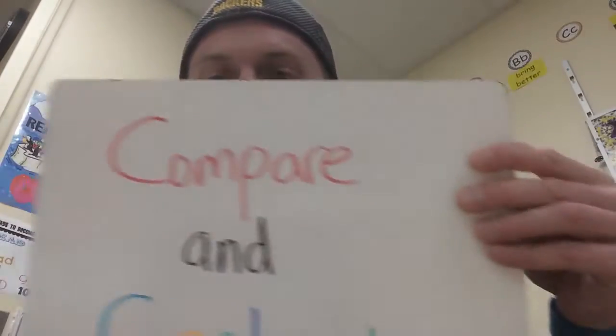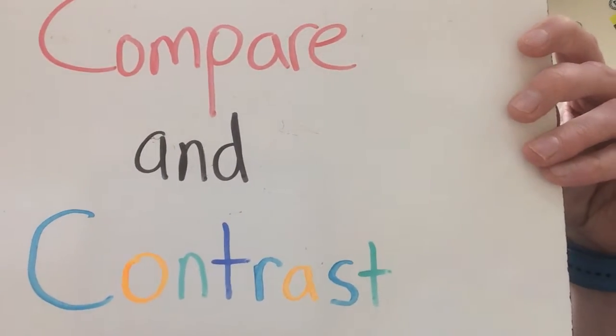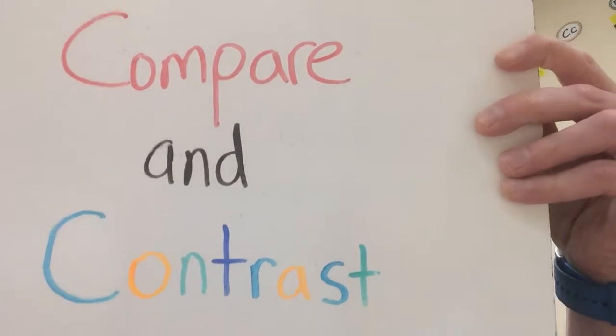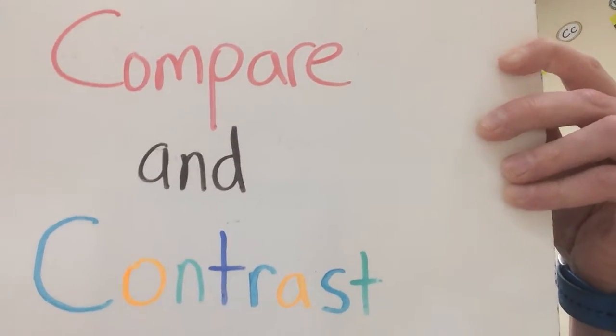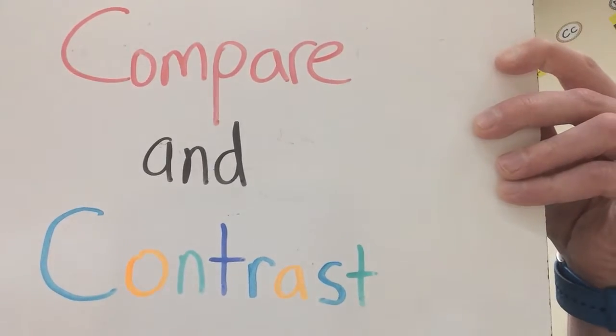Our comprehension skill that we're going to be working on is compare and contrast. Compare meaning what is the same, contrast meaning what is different. So your main job is going to be to learn about these two festivals and find out things that are the same between them and things that are different.